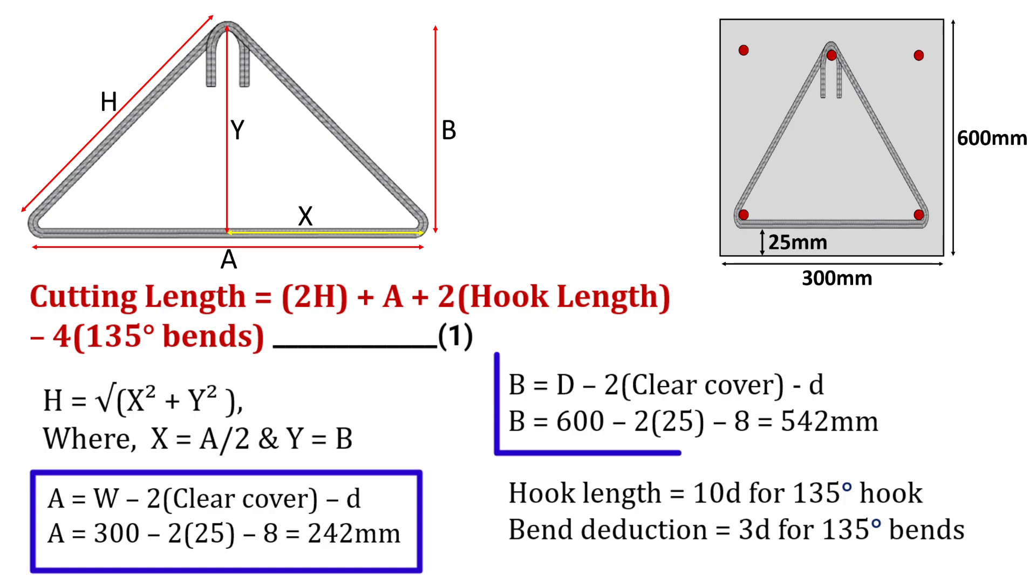Similarly, B will be equal to depth of beam minus twice clear cover minus dia of bar. On substituting these values, B will be equal to 542 mm.